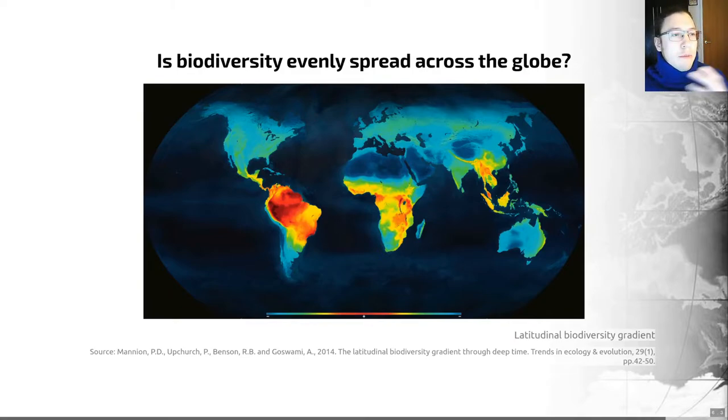That diversity declines as you move towards the poles of the planet, either the north or south, and that's where we're moving towards blues on this map here. That's an example based on terrestrial vertebrate species, but it's a pattern that we see in many other groups of animals and plants.